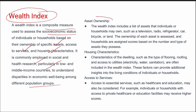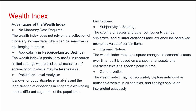The Wealth Index includes asset ownership such as television, radio, refrigerator, car, bicycle, or land, and housing characteristics based on type of flooring, roofing, access to utilities and services, with main focus on healthcare and education. The advantages are: no monetary data is required, good applicability in resource-limited settings, and it can be used for population-level analysis.